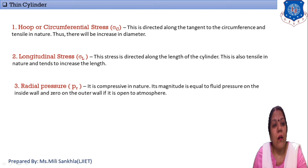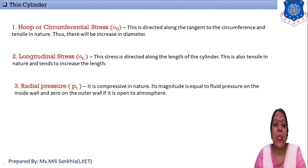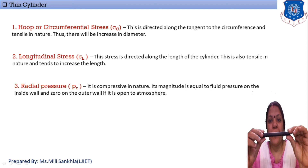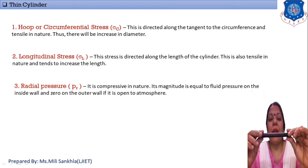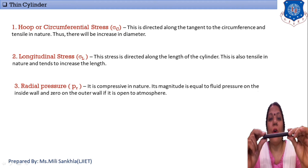Now we discuss three stresses that are induced in a thin cylinder. The first stress is hoop stress, or circumferential stress. The second stress is longitudinal stress. The third stress is radial pressure. Now, what is hoop stress? I take an object just like a thin cylinder — when stress acts on the circumference of the thin cylinder it is known as hoop stress or circumferential stress.